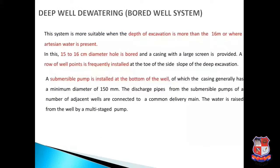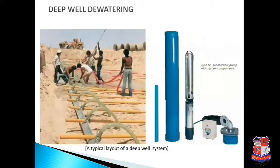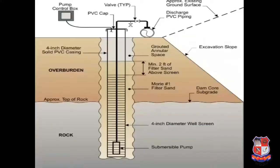Next is deep well dewatering, also known as the bored well system. This system is most suitable when the depth of excavation is more than 16 meters or where artesian conditions are present. A 15 to 16 centimeter diameter hole is bored and a casing with a large screen is provided. A row of well points is frequently installed at the toe of the side slope. A submersible pump is installed at the bottom of the well, with casing having a minimum diameter of 150 mm. Discharge pipes from adjacent wells are connected to a common delivery, and water is raised by a multi-stage pump.